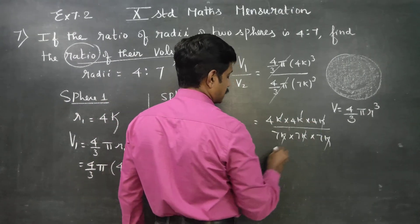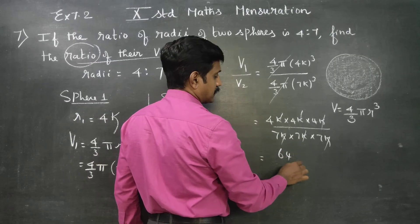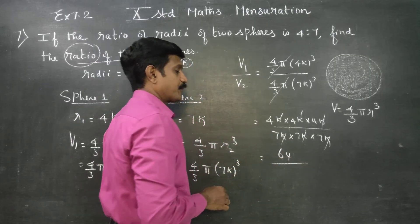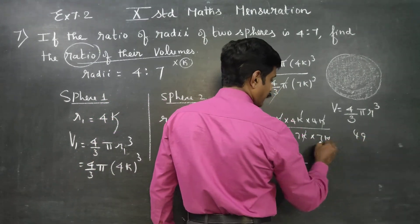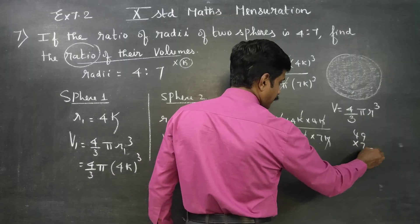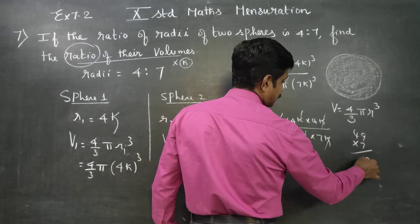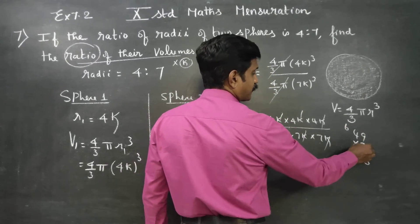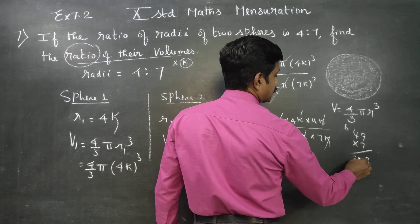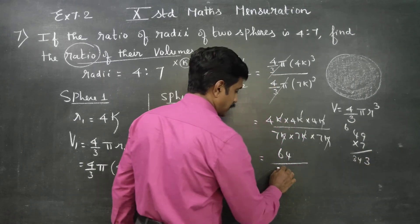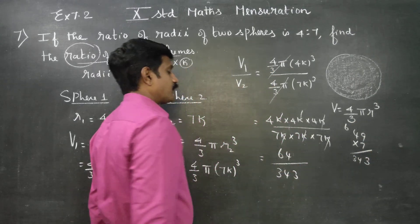Now 4 cubed: 4 times 4 is 16, 16 times 4 is 64. And 7 cubed: 7 times 7 is 49, 49 times 7 — 7 nines are 63, carry 6, 7 fours are 28, add 6 gives 34 — so 343.